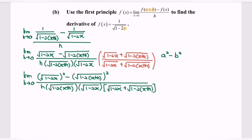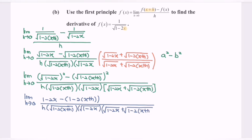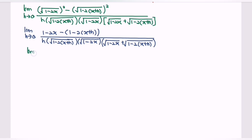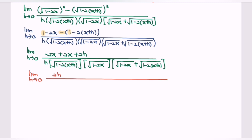So kindly simplify the situation. Limit as h approaching 0, where we have 1 minus 2x, minus 1 minus 2(x plus h), over h times the denominator bracket. Simplifying, 1 minus 1 gives 0, and we will have 2h over h.